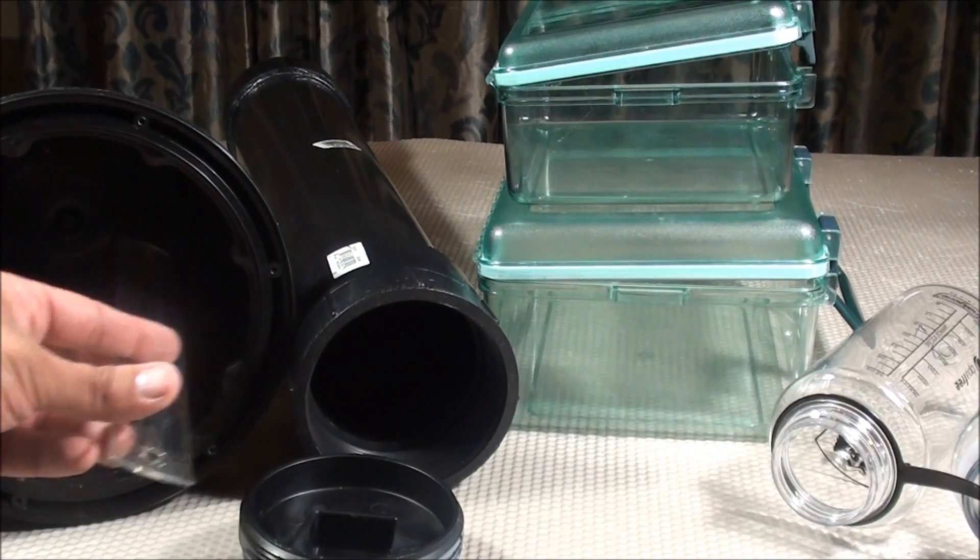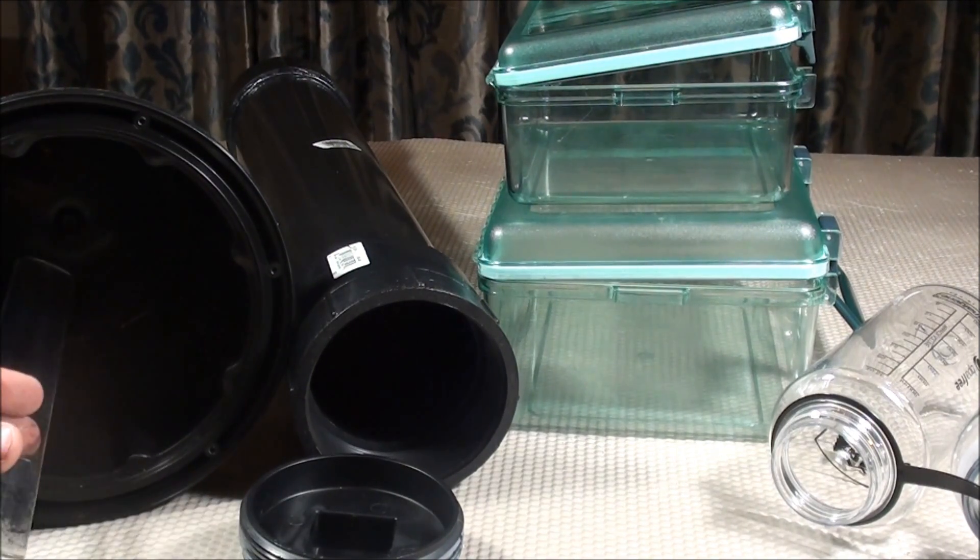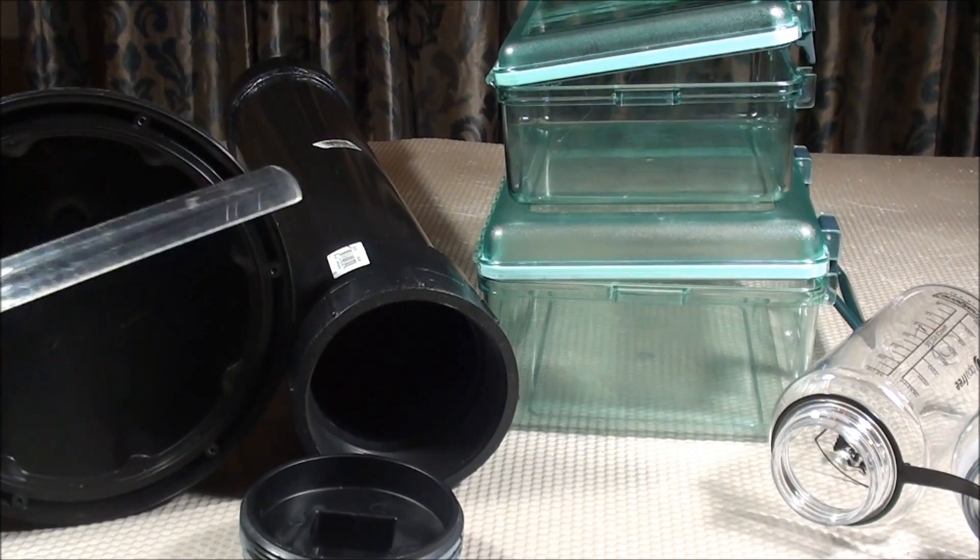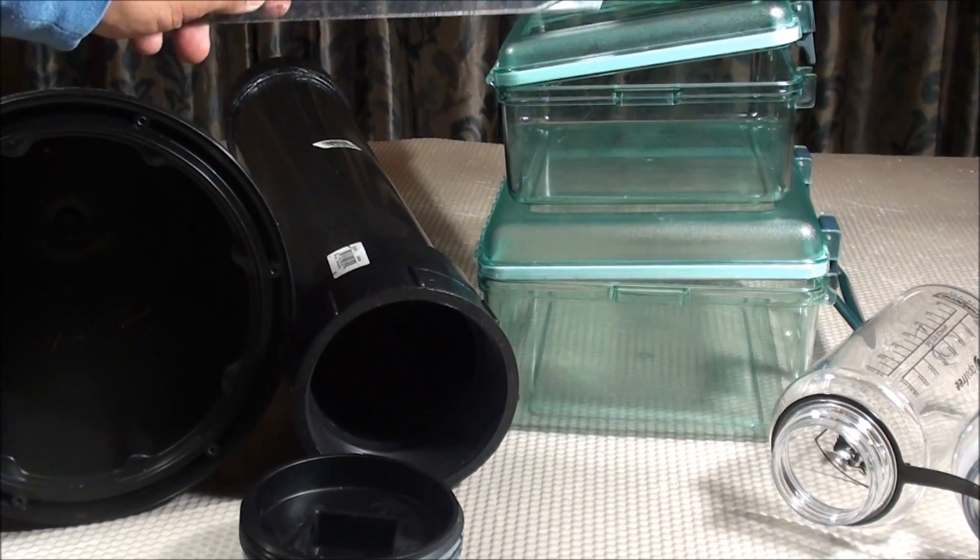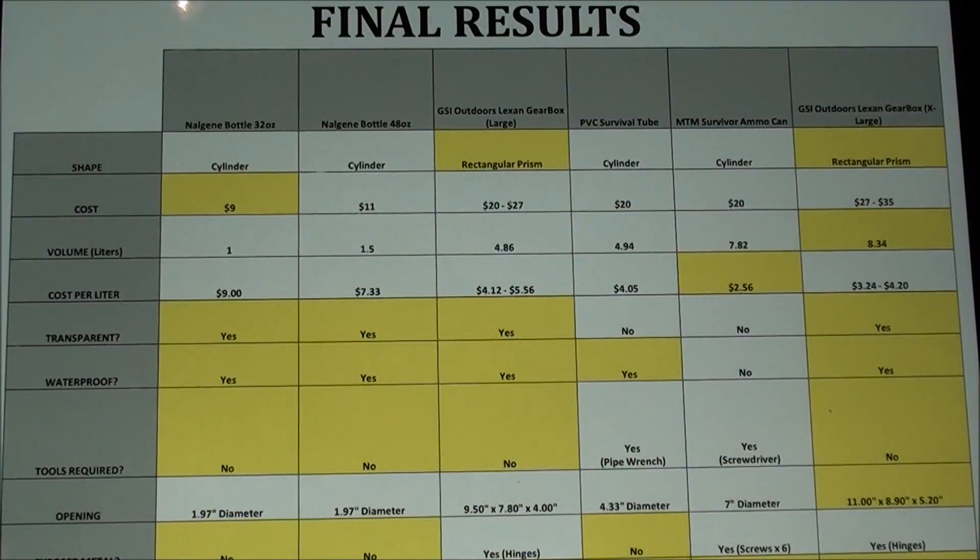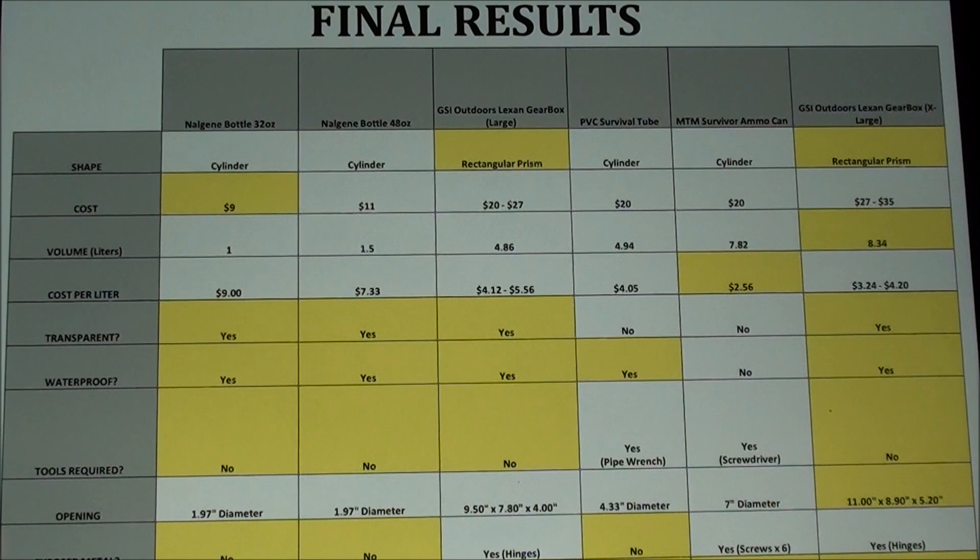So as far as openings go, as you can imagine the smallest ones are the Nalgene water bottles followed by the PVC survival tube. Next, the Survivor ammo can which has a fairly good opening although it's also cylinder so you can't fit a completely square item in there. And the best one, in my opinion, are the rectangular GSI gearboxes. That's going to do it for all the test categories for this particular video series. So now let's go through the final results.